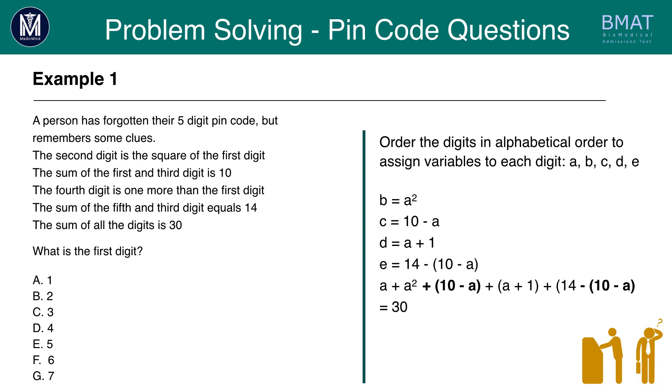First we can cancel out plus 10 minus A and minus 10 minus A, because if you just put them together it will equal zero. We're left with A plus A squared plus A plus 1 plus 14 equals 30. Now we solve it as we would with any quadratic equation. We expand A plus 1 and that gives us A squared plus 2A plus 15 equals 30. Now we bring the 30 over to the left hand side so the right hand side equals zero. We get A squared plus 2A minus 15 equals zero.